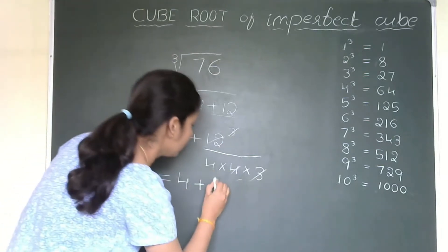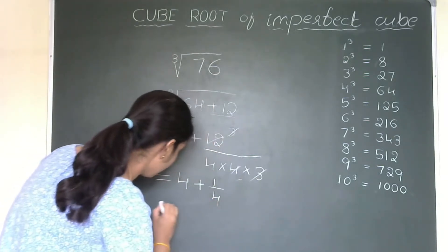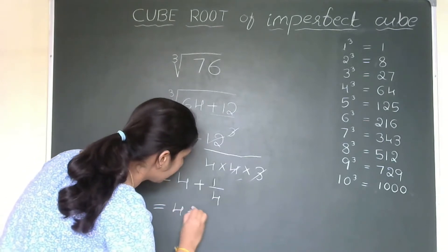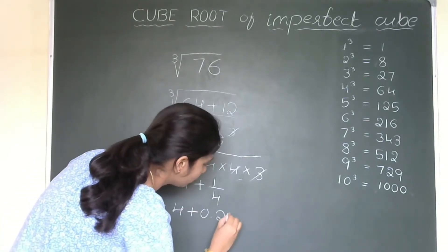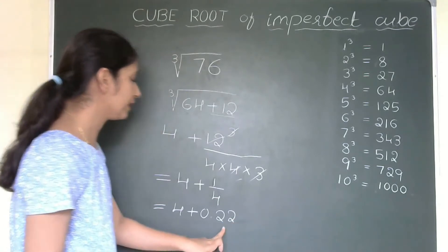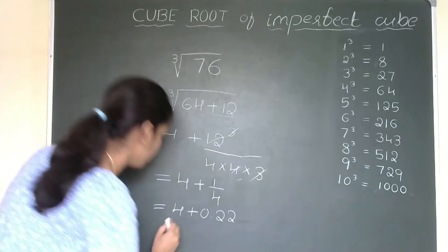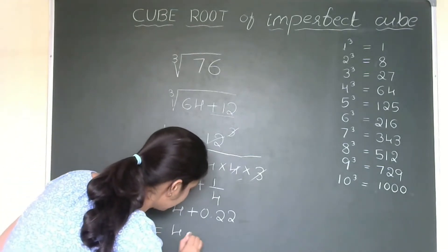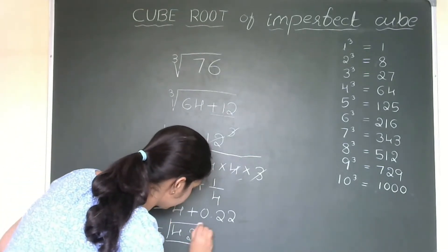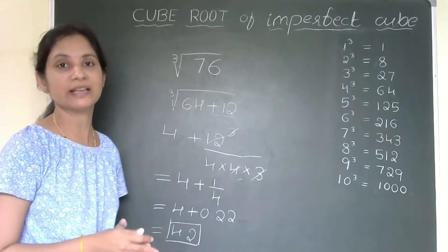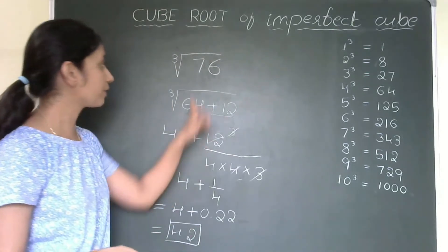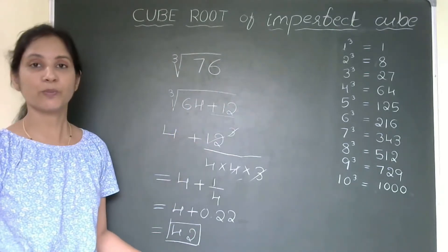So, 1 divided by 4 is 0.25 you will get like this. So, you can take one decimal point or two decimal places. 4.25 is my final answer. Please cross check for the answer. This is the approximate value. That means cube root of 76 is 4.2.